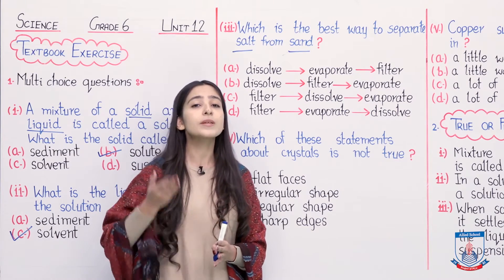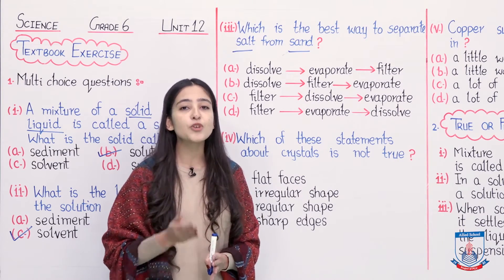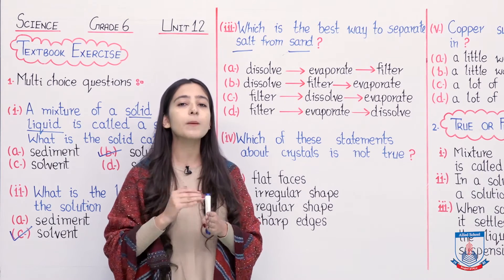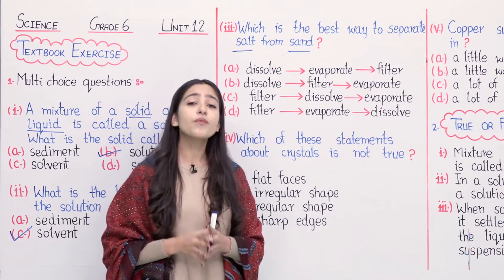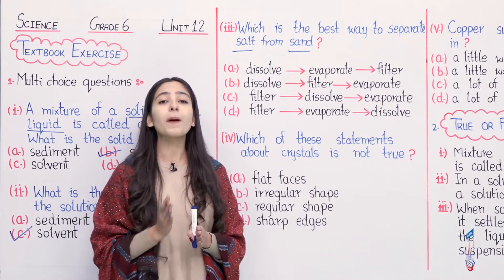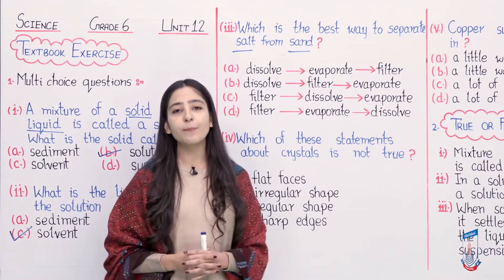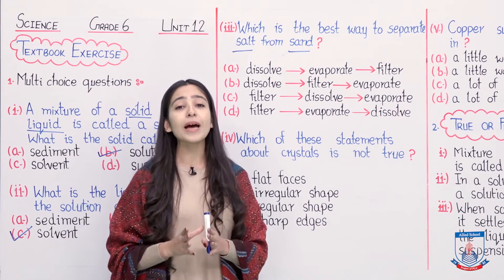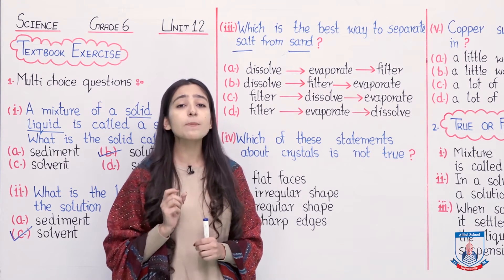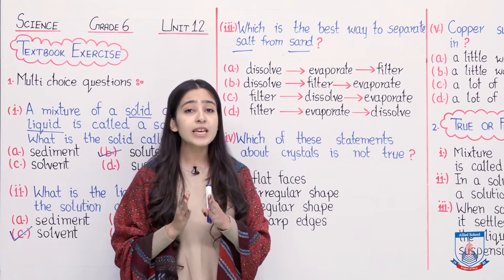We pass this suspension through filter paper. The insoluble particles — the sand — will remain on the filter paper as residue. The liquid that passes through is called filtrate, which is a solution of salt dissolved in water. We then separate the dissolved salt by evaporation or crystallization: we heat the mixture, the water vaporizes converting from liquid to gaseous state, and we are left with salt crystals behind.